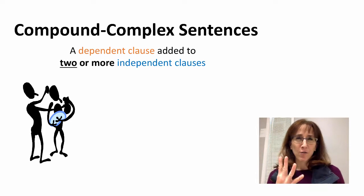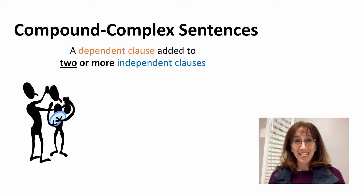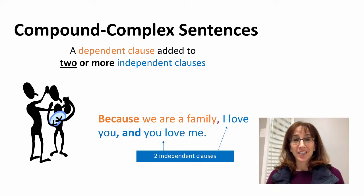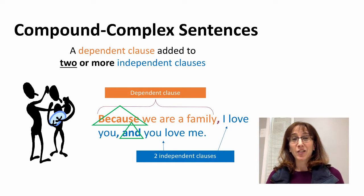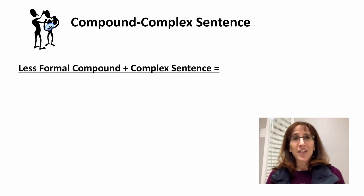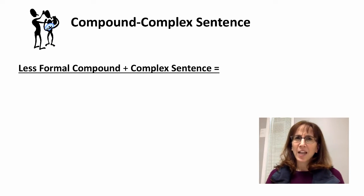Here's our fourth and final sentence type: the compound-complex sentence. This is basically a dependent clause added to two or more independent clauses. For example, 'because we are a family' is the dependent clause, and 'I love you' and 'you love me' are the two independent clauses. In essence, the compound-complex sentence is a compound sentence plus a complex sentence. These can be a little bit challenging for students to write and analyze.